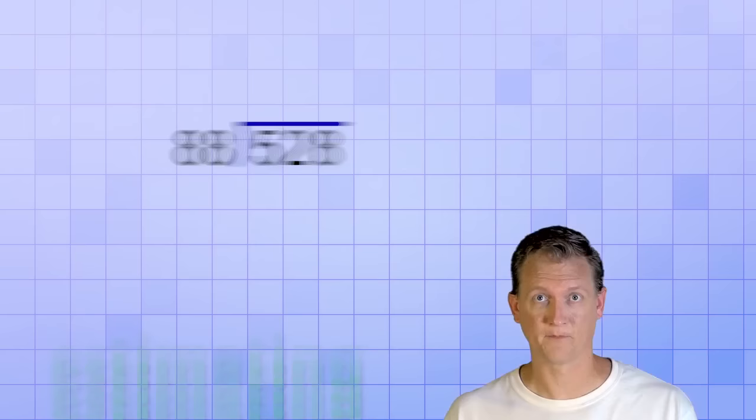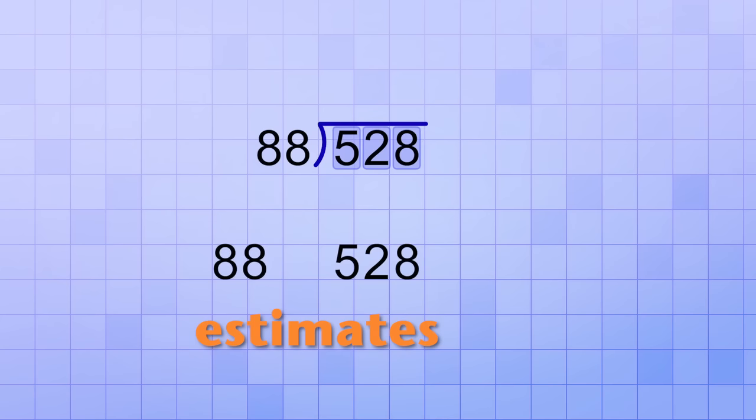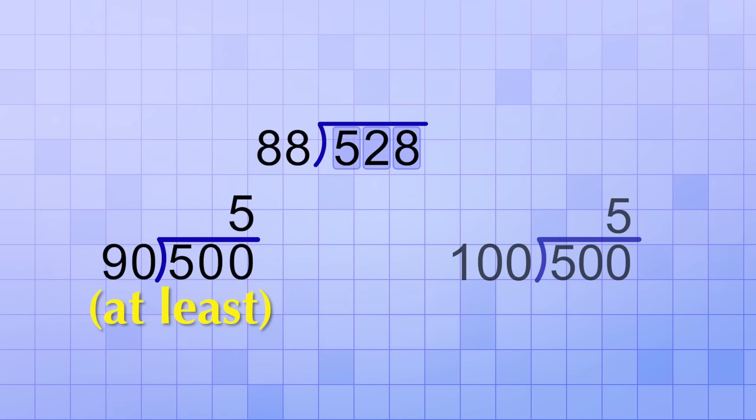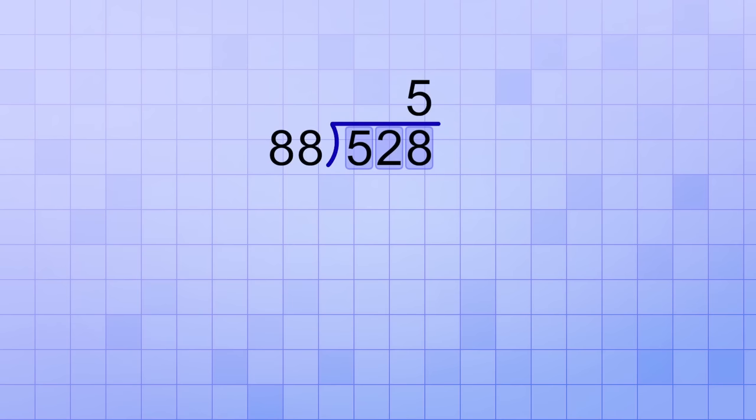Well, a little estimating will help us make much better guesses at our answer. The numbers 88 and 528 are kind of hard to work with. But if we made estimates of those numbers, like if we changed them to 90 and 500, that would make it easier to estimate the answer. Since 100 would divide into 500 exactly 5 times, that means that 90 will divide into 500 at least that many times. So, let's make 5 our first estimate for the answer. To check to see how good that estimate is, we multiply 5 by 88, and then subtract that from 528 to see what the remainder is.